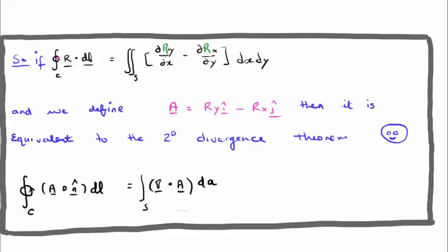So how do we put it together? If we have a vector field R and put it into Green's theorem — the closed line integral of R dot dl — it's equal to the surface integral of ∂R_y/∂x minus ∂R_x/∂y. If we define another vector field capital A as R_y î minus R_x ĵ, then this is equivalent to the two-dimensional divergence theorem. There is a bit of a proviso, but nonetheless Green's theorem is equivalent to the two-dimensional divergence theorem. So that was quite difficult. Nonetheless, thanks for watching. Please pass it on to your friends, subscribe to my channel, and check out universityphysicstutorials.com. Thank you.